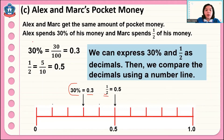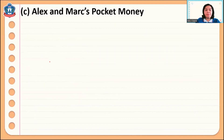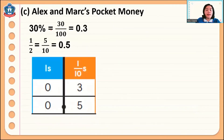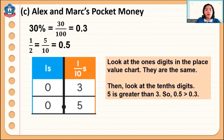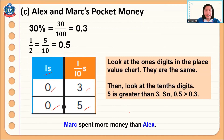So Alex spends less money compared to Mark, because Mark spends 0.5 or one half of his money. We can also use a place value chart to compare: 30 percent is 0.3 and one half is 0.5. Looking at the ones place, they have the same digit, but in the tenths place we have 3 and 5. Since 5 is greater than 3, 0.5 is greater than 0.3. Therefore, Mark spent more money than Alex.